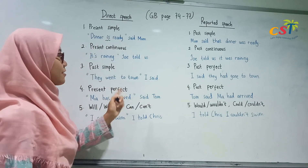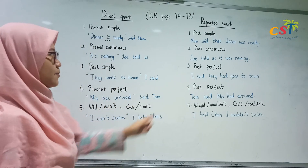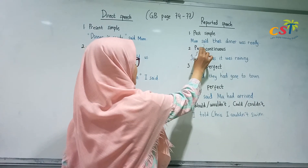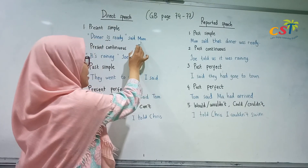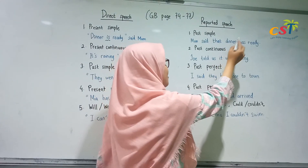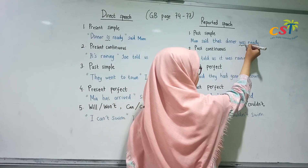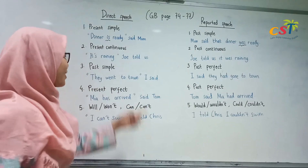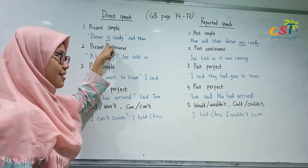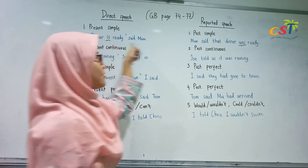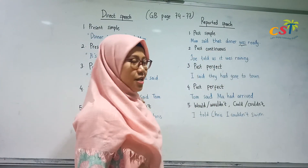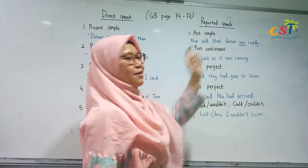For reporting speech or indirect speech, we change it into past simple. 'Mom said that dinner was ready.' So, if in the direct speech it used 'is' as the verb, for the reported speech we use 'was,' because we change it into past simple.